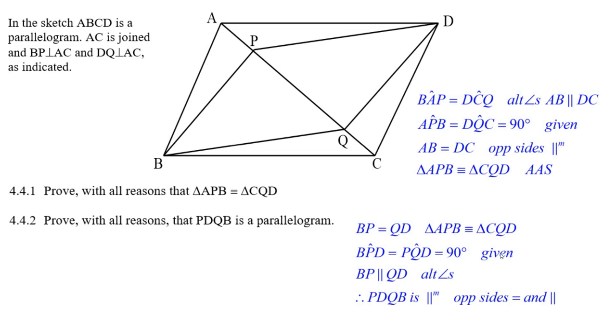We've got that their 90 degrees was given. We've got that BP is equal to QD because of congruent triangles. And now because those are both 90 degrees, they're both equal, they're alternate angles, that means they're parallel. Well, that's it. We've got opposite sides equal and parallel, and that's enough to say that PDQB is a parallelogram. All done.